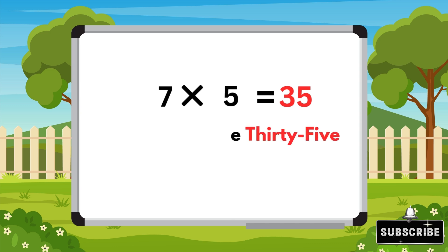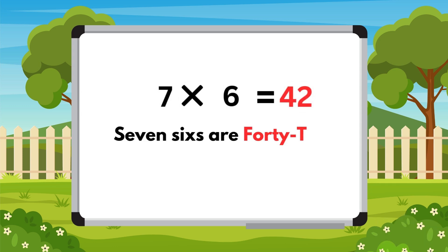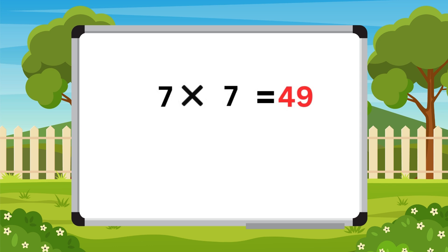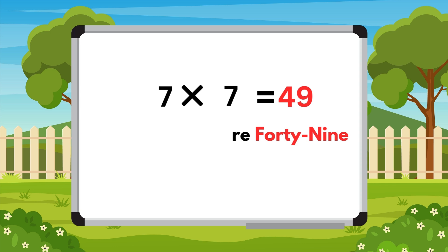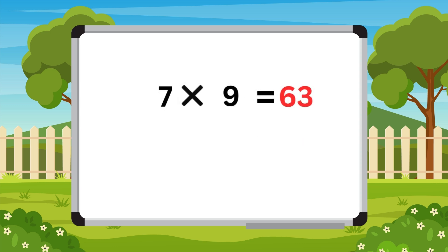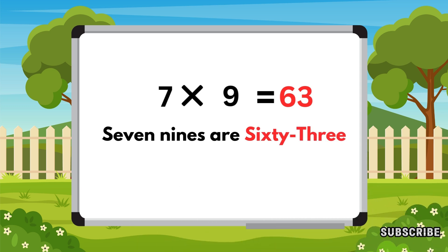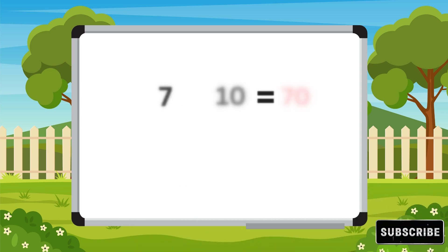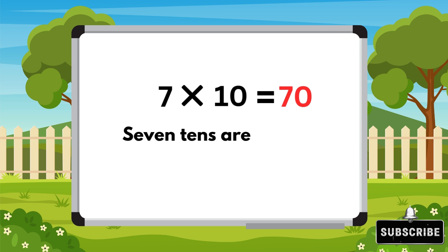Seven fives are thirty-five. Seven six are forty-two. Seven sevens are forty-nine. Seven eights are fifty-six. Seven nines are sixty-three. Seven tens are seventy.